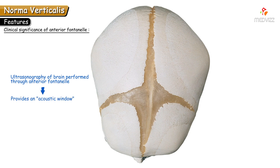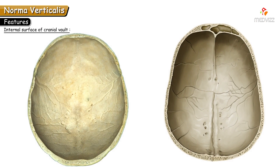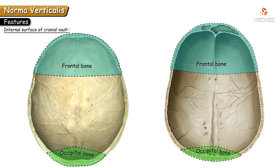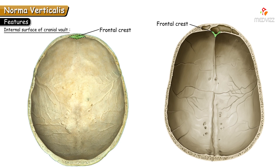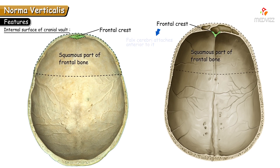The internal side of the cranial vault is also termed the calvaria. It contains the same bones as norma verticalis — anteriorly the frontal, posteriorly the occipital, and on each side the parietal bones. The frontal crest is a midline crest seen on the inner aspect of the squamous part of the frontal bone; the falx cerebri — a fold of dura mater — attaches to this crest anteriorly.